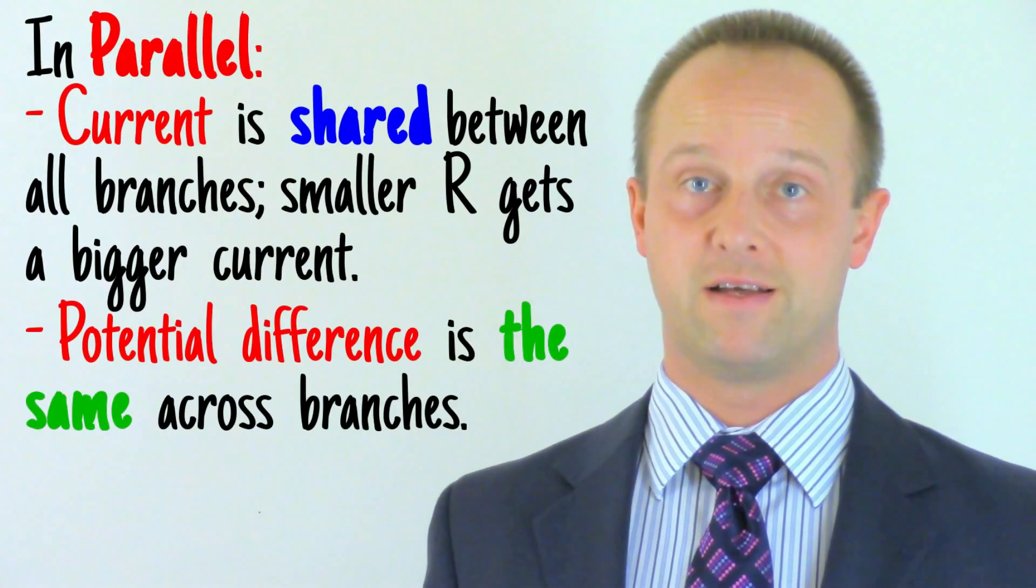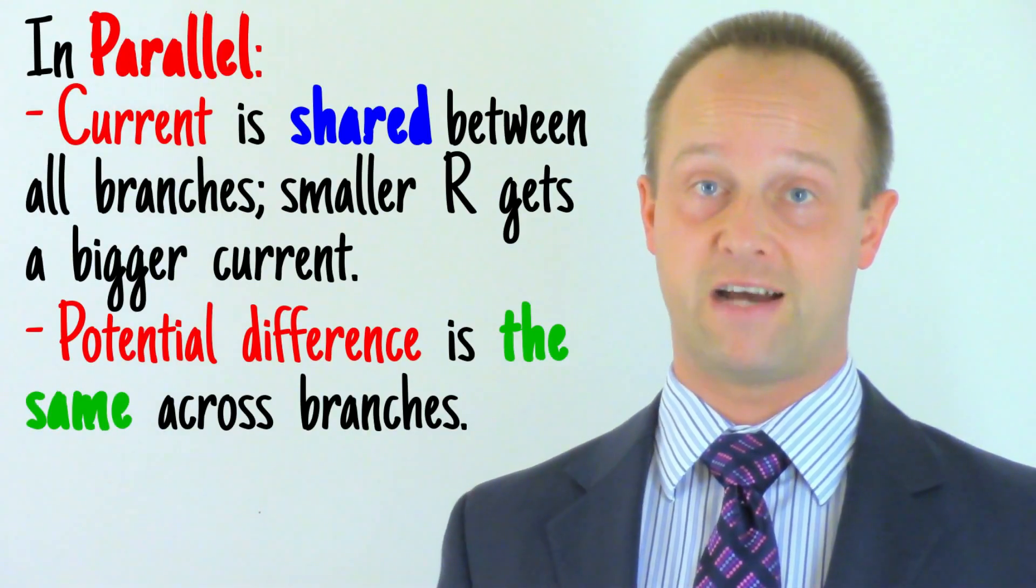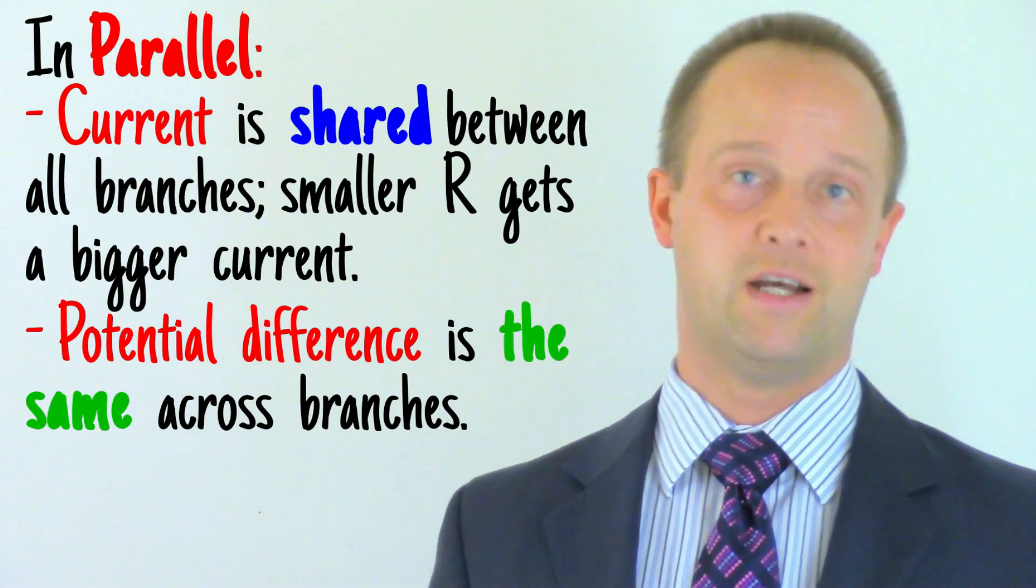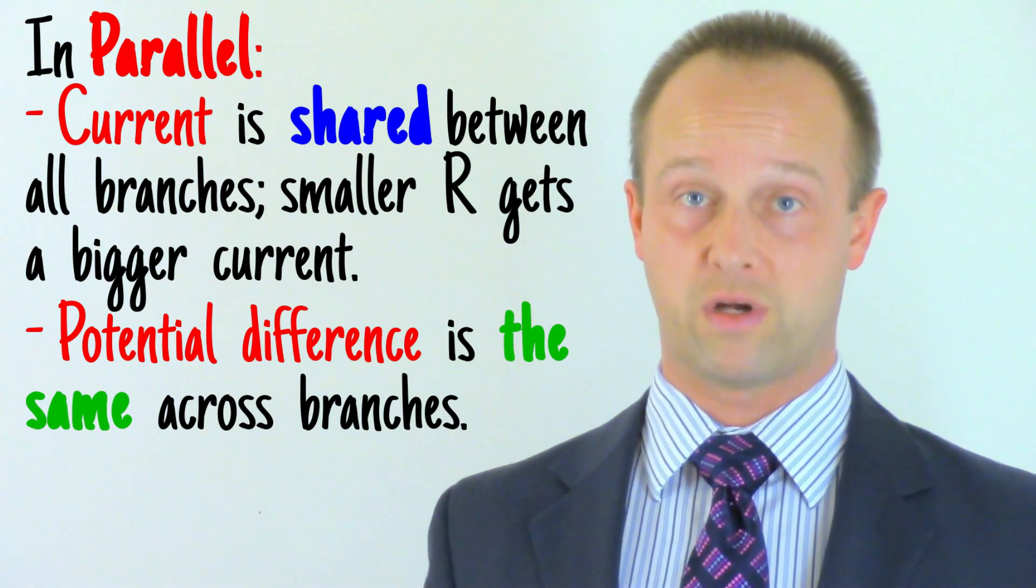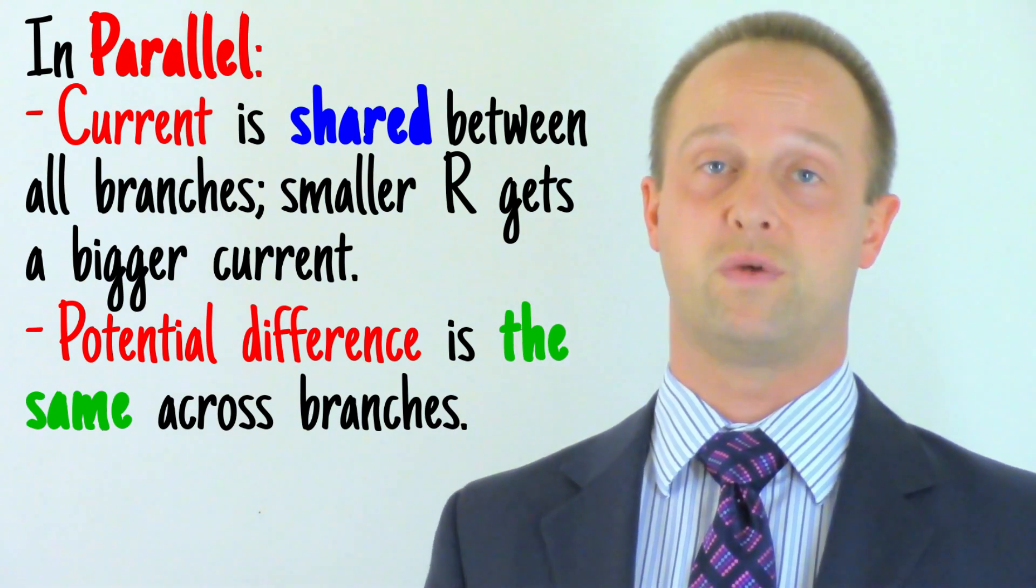In our series circuit, the current was the same through all the components, but in parallel, the total current is shared out among the parallel branches, as some electrons flow one route, some flow another route, and with more electrons and more current going the low resistance route.